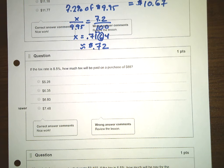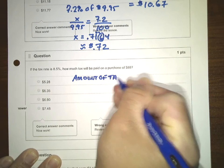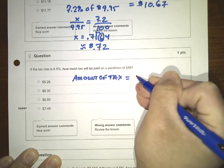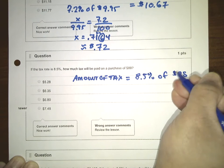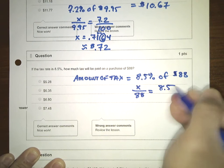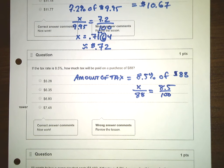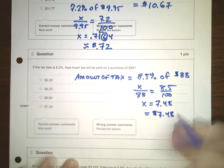If the tax rate is 8.5%, how much tax will be paid on a purchase of $88? The amount of the tax: we need to figure out 8.5% of $88. X out of 88 equals 8.5 out of 100, so X is $7.48.